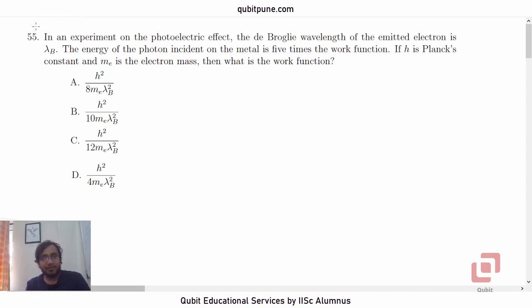This is question number 55 from the paper. In an experiment on the photoelectric effect, the de Broglie wavelength of the emitted electron is lambda b. The energy of the photon incident on the metal is five times the work function. If h is the Planck's constant and Me is the mass of electron, then what is the work function?